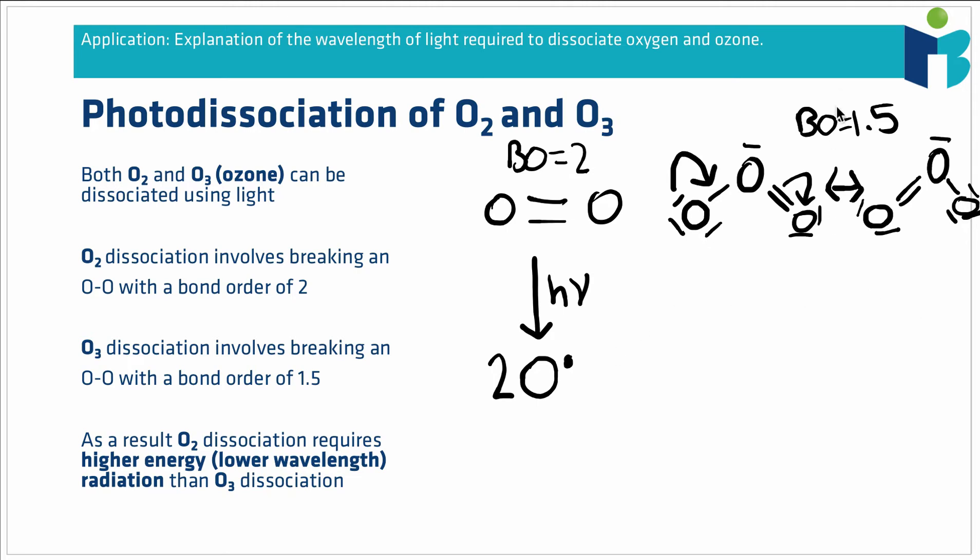Equally we can hit an ozone molecule with a certain frequency of light and that will create one oxygen molecule and one free oxygen radical. In this case we had O3 so we end up with three oxygen atoms: two bonded together and one free oxygen atom.